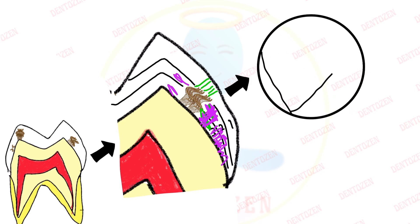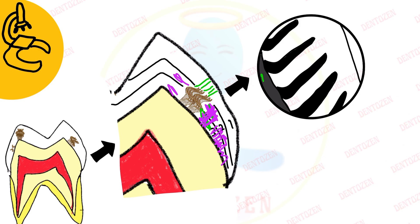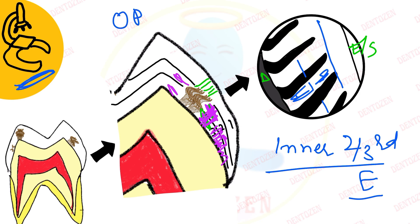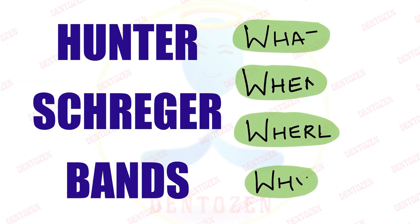On a section under the microscope, these bands appear with the dentino-enamel junction on one side and the enamel surface on the other. Hunter-Schreger bands — alternating light and dark bands — are present in the inner two-thirds of the enamel. This is seen under the microscope, so we say it is an optical phenomenon, that is, it is observed under light. Now we come to the second part: how to write your answer.